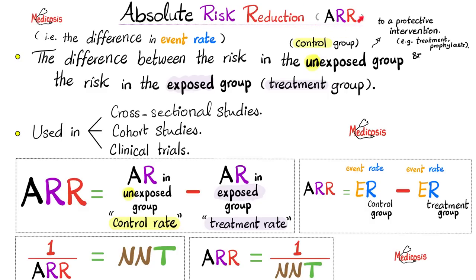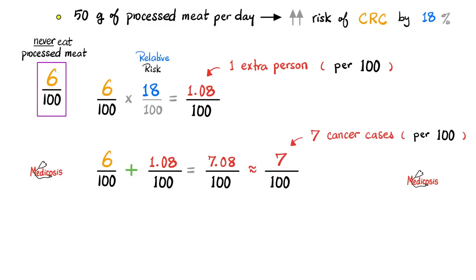Absolute risk reduction is the difference between the risk in the unexposed group or control group and the absolute risk in the exposed group or treatment group — or: event rate in the control group minus the event rate in the treatment group. If you flip the absolute risk reduction, you get the number needed to treat. I should not call it absolute risk reduction here; I should call it absolute risk increase or simply attributable risk.